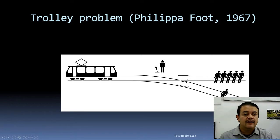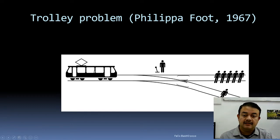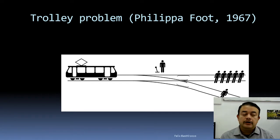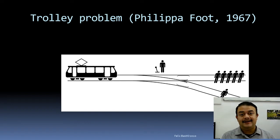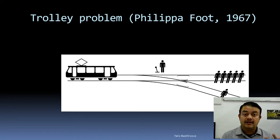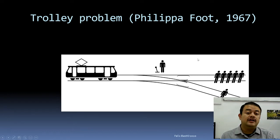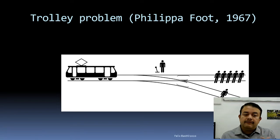What would you do — kill five to save one, or kill one to save five? Suppose the single person is a child and the five are adults. Or suppose the five are of one nationality and the one is of another. The trolley problem challenges us to examine our moral reasoning and, from an evolutionary standpoint, it ultimately comes down to shared gene pool — if the individual shares genes with you, you are far more likely to act to save them.